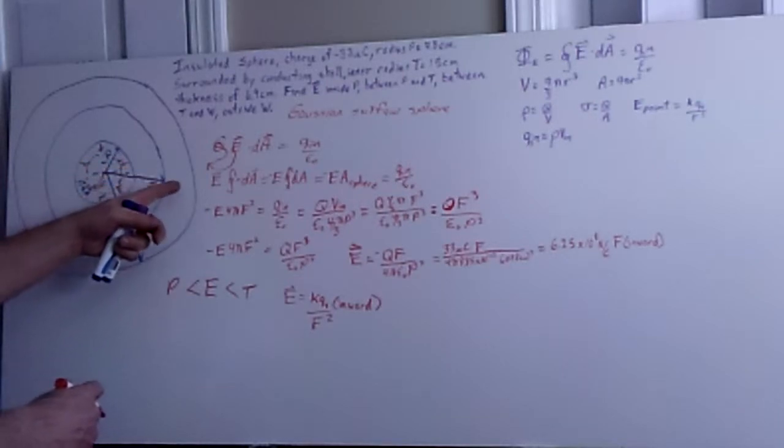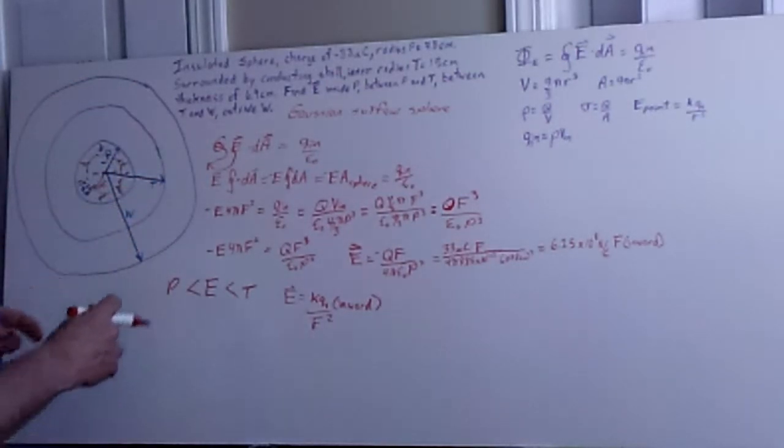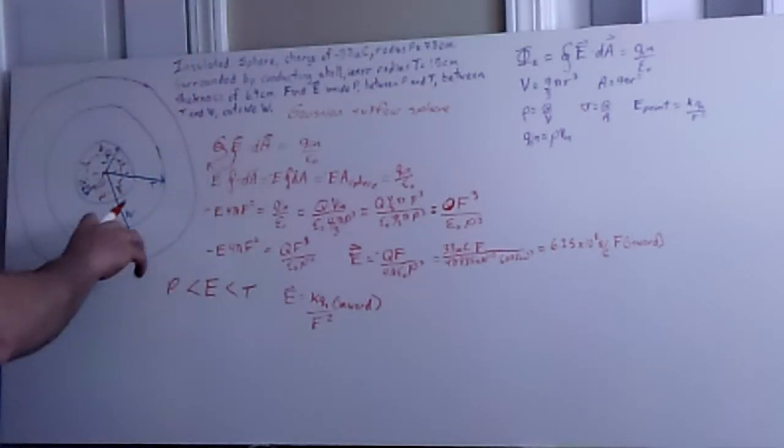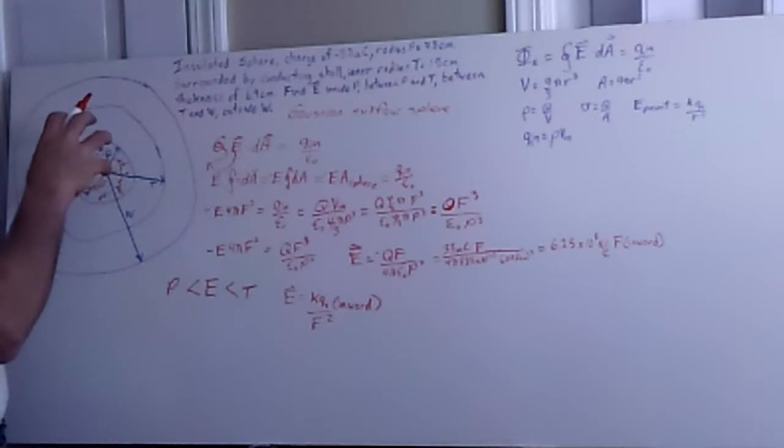Now when we're trying to look at the electric field in between the two walls of our conducting shell, what happens is that when we have some negative charge in here, what does that negative charge do to this shell that's then thrown around the outside of it?